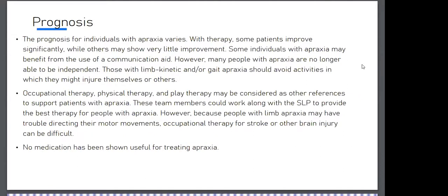Prognosis for individuals with apraxia is variable. With therapy, some patients improve significantly, while others may show very little improvement. Individuals with apraxia may benefit from the use of communication aids. However, many people with apraxia are no longer able to be independent, so those with limb-kinetic apraxia should avoid activities in which they might injure themselves or others. A combination of physical therapy and occupational therapy may be considered.